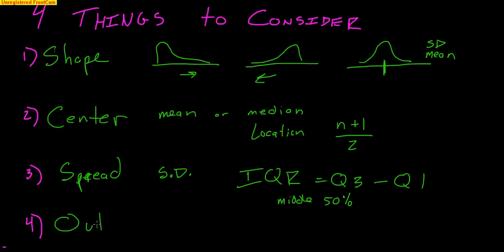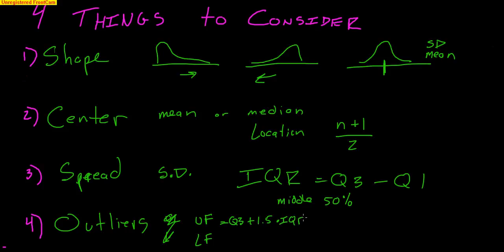Lastly, we talk about outliers. We have two formulas: the upper fence is Q3 plus 1.5 times the IQR, and the lower fence is Q1 minus 1.5 times the IQR. If you are outside of those two fences, you are considered an outlier — bigger than the upper fence or lower than the lower fence.